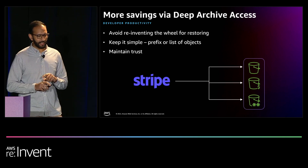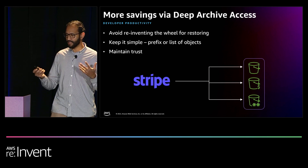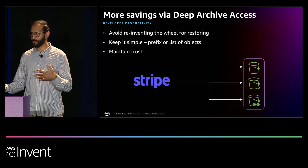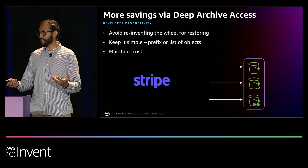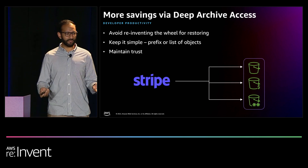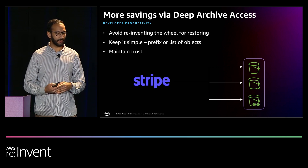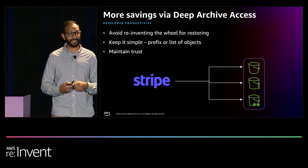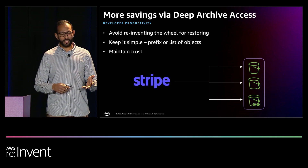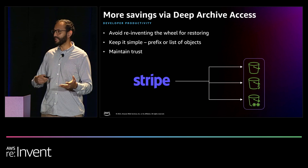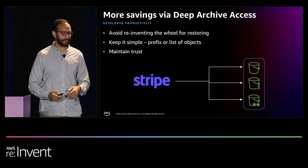To uphold developer productivity, our abstraction layer — effectively a microservice that helps control permissions and secure access — was maintained. Before this change, it accepted a prefix or a list of objects as input. After, the input remained exactly the same so that our developers had an easier experience. It simplified the head and restore operations so that we wouldn't have to rethink how to use S3, regardless of what tier our objects reside in.